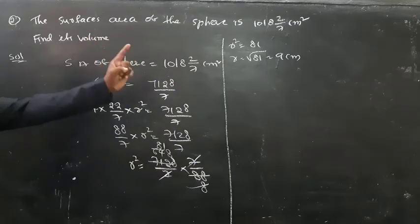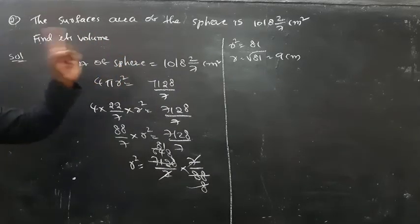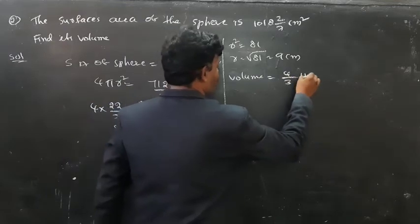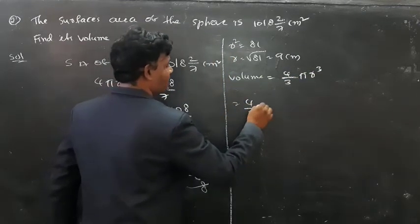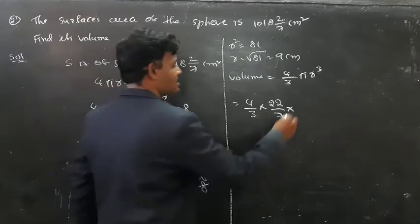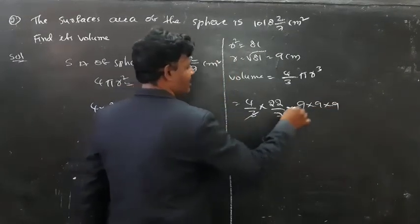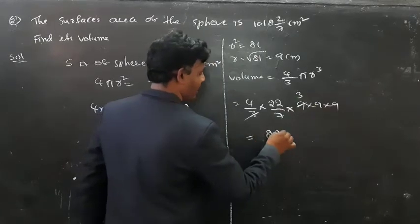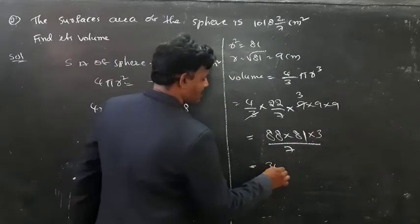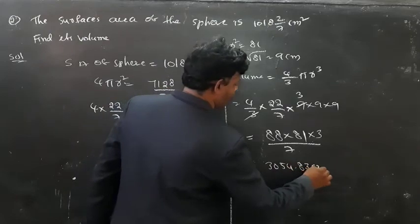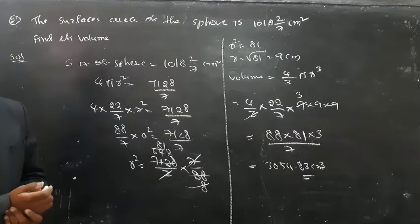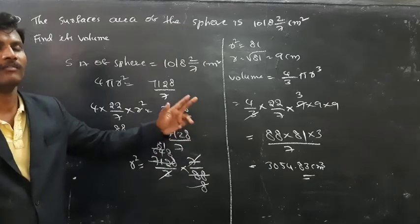Now I know the value of the radius is 9 cm. I need to find the volume of the sphere. Volume = (4/3)πr³ = (4/3) × (22/7) × 9 × 9 × 9. After cancellation we get 88 × 81 × 3 / 7. After the calculation you will get the volume of the required sphere.